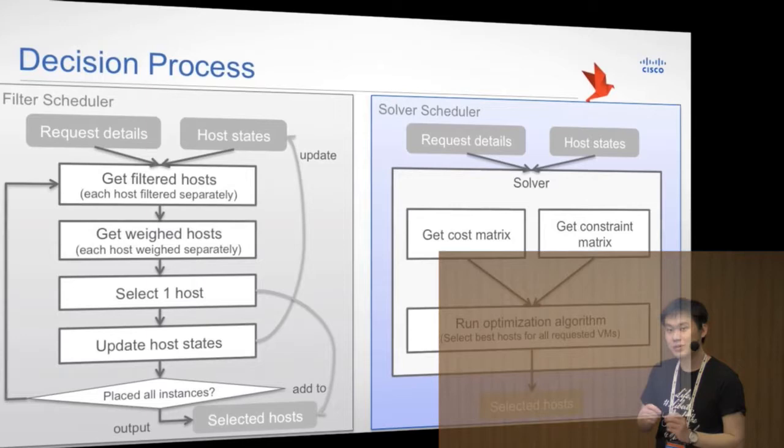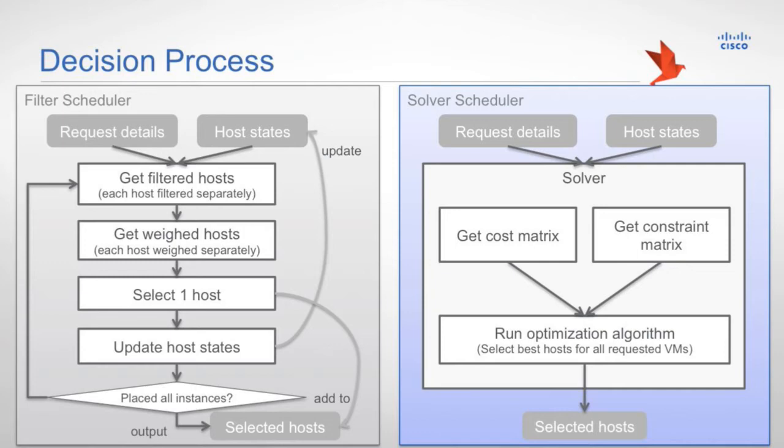What is the key difference? The key difference is that filter scheduler makes use of local information. For example, what is the status of the current host I am checking? What is the details of the current VM that I'm placing? But the solver scheduler uses global information that takes all the requested VMs' specifications and takes all the host states and generates a global optimal solution.